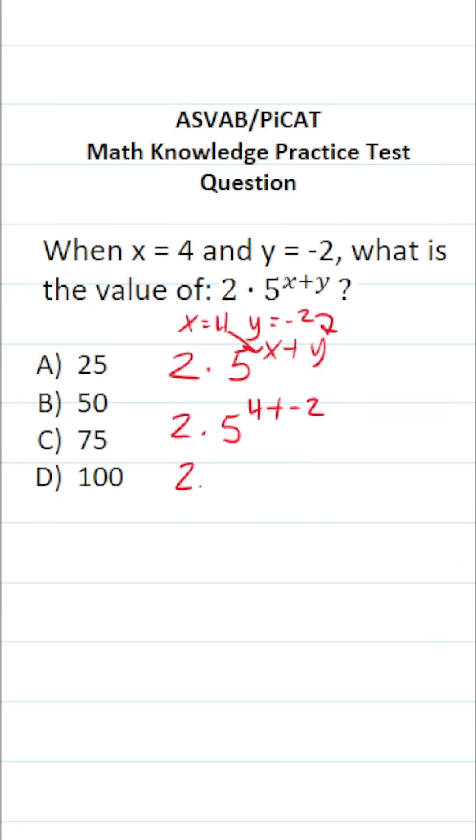I can rewrite this to make it much easier to read. 4 plus negative 2 is the same thing as 4 minus 2, so this becomes 2 times 5 to the 4 minus 2 is the same thing as 2.